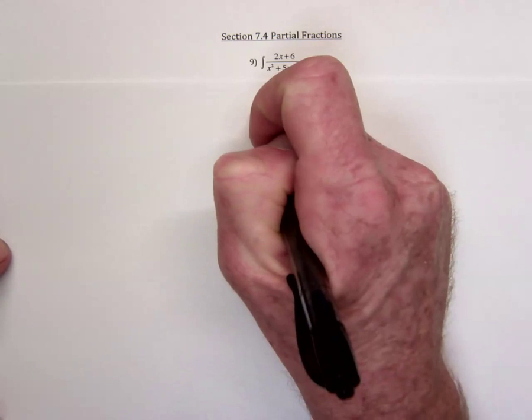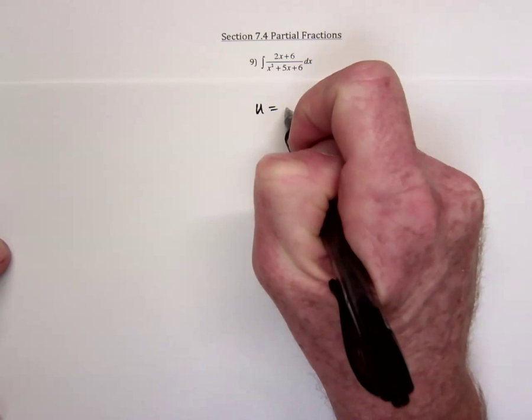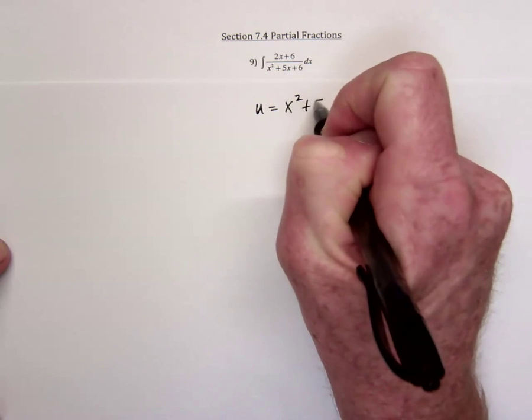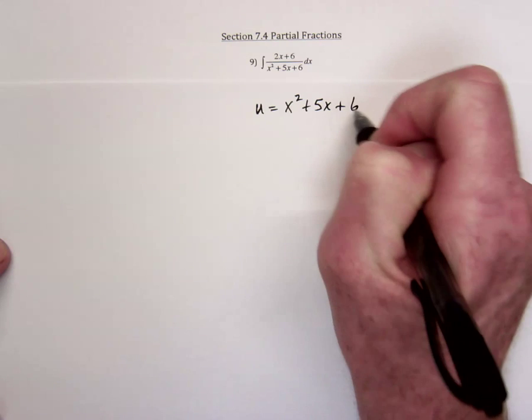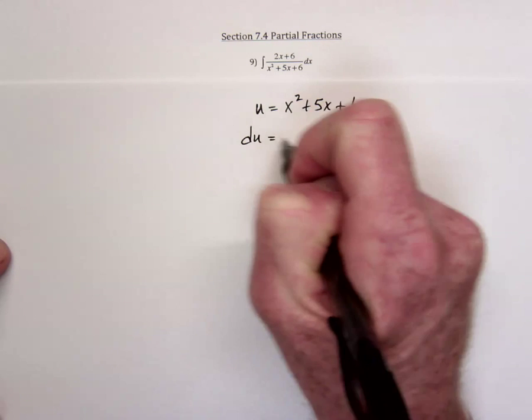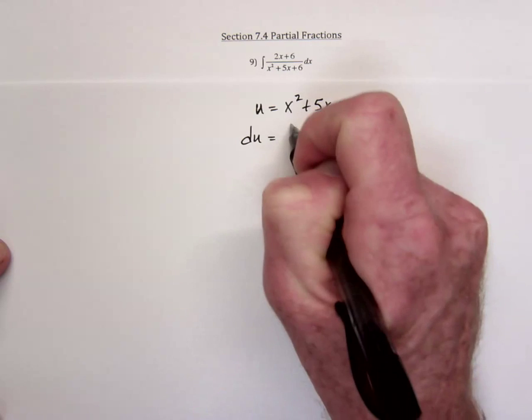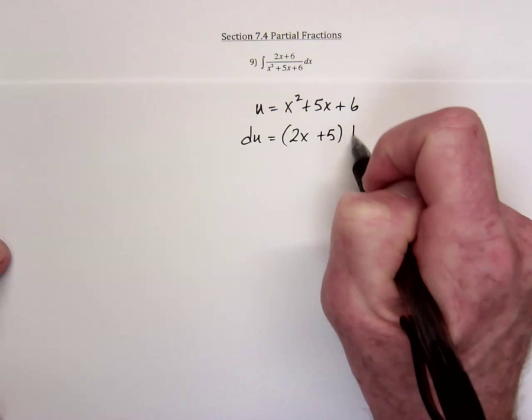I often say it's a good idea to start with u substitution. If we did, the u would equal the denominator, and then take the derivative of that, and we'd have 2x plus 5.